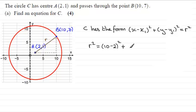And that is the difference between the y coordinates, that's 7 minus 1 squared. And so what we've got here is 8² plus 6², 64 plus 36, which is 100. So we've got the radius squared.